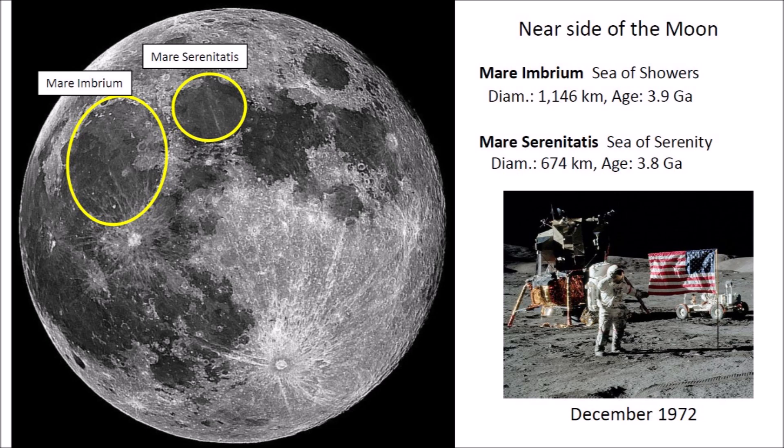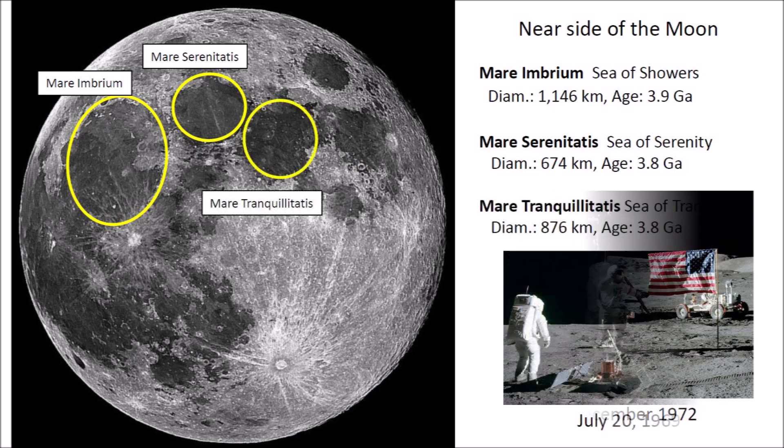Apollo 17 was a 12-day mission that took place between the 7th and the 19th of December 1972. Mare Tranquillitatis, the Sea of Tranquility, has a diameter of 876 kilometers and an age of 3,800 million years. This was the site selected for the first Moon landing by the Apollo 11 spacecraft because the surface is relatively flat. Neil Armstrong and Buzz Aldrin collected 21.5 kilograms of dirt and rock samples. Analysis of these samples showed that the Moon has the same geological composition as the Earth, eliminating the hypothesis that the Moon had originated elsewhere in the Solar System and then been captured by the Earth.